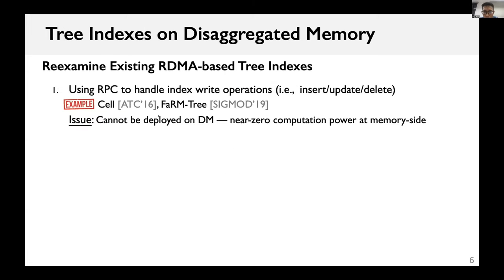We first revisit existing RDMA-based tree indexes, which can be grouped into three classes. Several tree indexes like CELL and FaRM tree rely on RPC to handle write operations. They are ill-suited for disaggregated memory due to the near-zero computation power of memory servers.